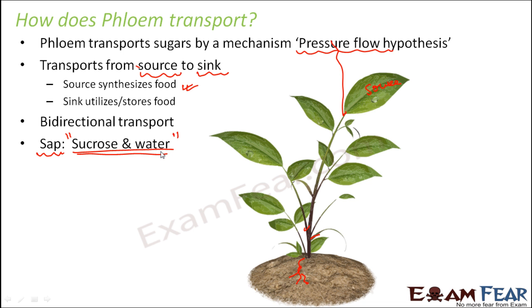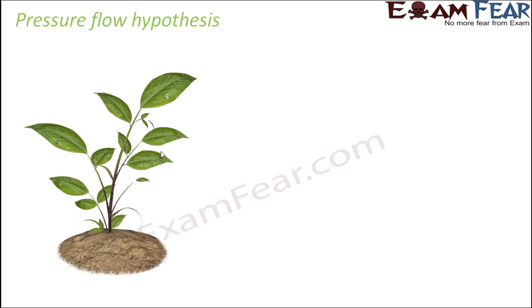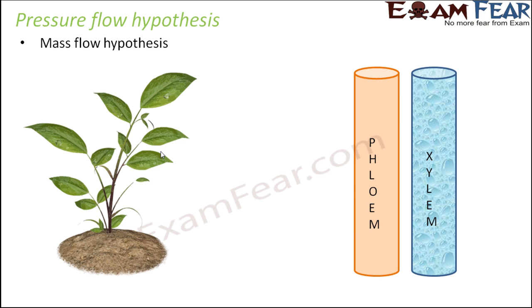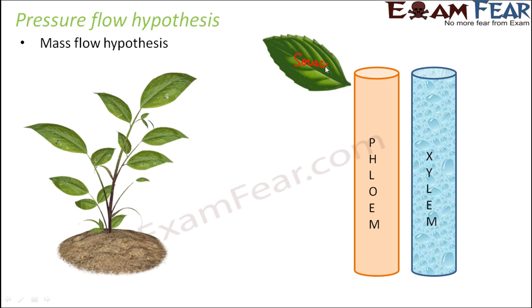Now let us understand the pressure flow hypothesis. This is also known as the mass flow hypothesis because the movement of particles occurs in mass. We have a xylem tube carrying water and a phloem tube carrying sap. There is a source — the leaves — which prepare food by photosynthesis, and a sink to which the food materials need to be transported.